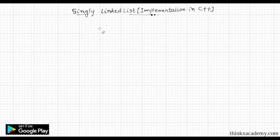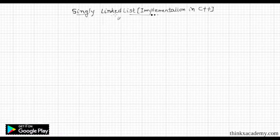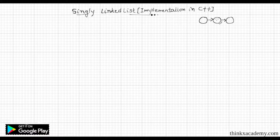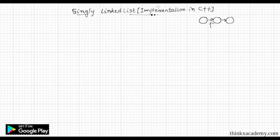In this tutorial, we are going to implement a singly linked list in C++. We discussed linked lists in the previous tutorial. A singly linked list is just a collection of nodes which are referenced using pointers, and when we are using a single pointer, we call it a singly linked list.